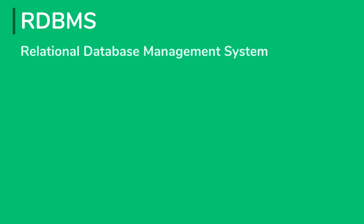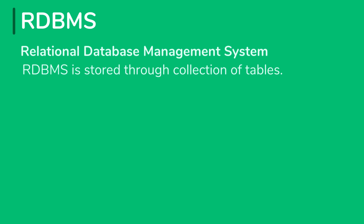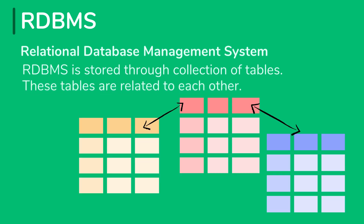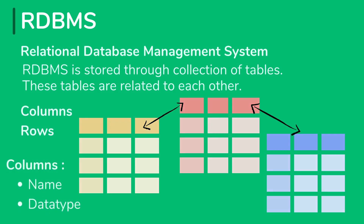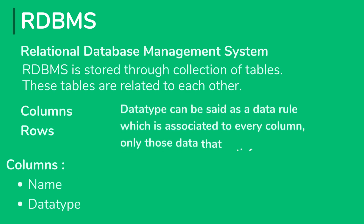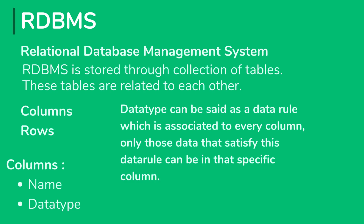RDBMS, which stands for relational database management system, stores data through a collection of tables. These tables are related to one another. Each table consists of columns and rows, and each column has a name and data type. A data type is a data rule associated with every column — only data that satisfies this rule can be stored in that column. A row can be treated as a record formed by a single or multiple columns.